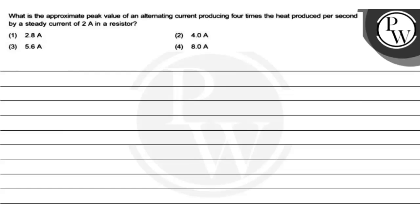Hello guys, let's see the question. The question says, what is the approximate peak value of an alternating current producing 4 times the heat produced per second by a steady current of 2A in a resistor?